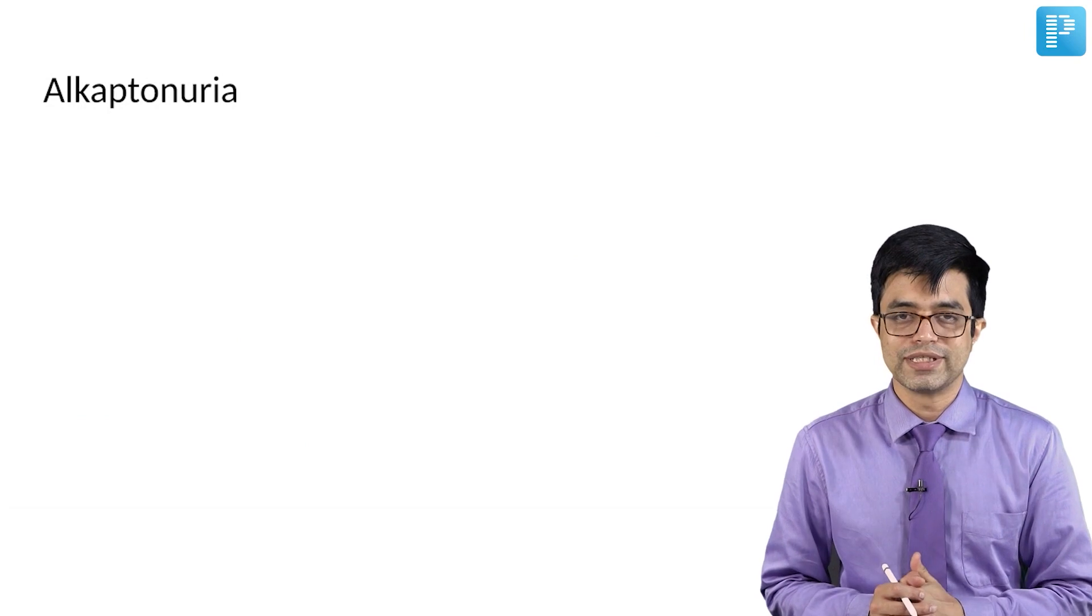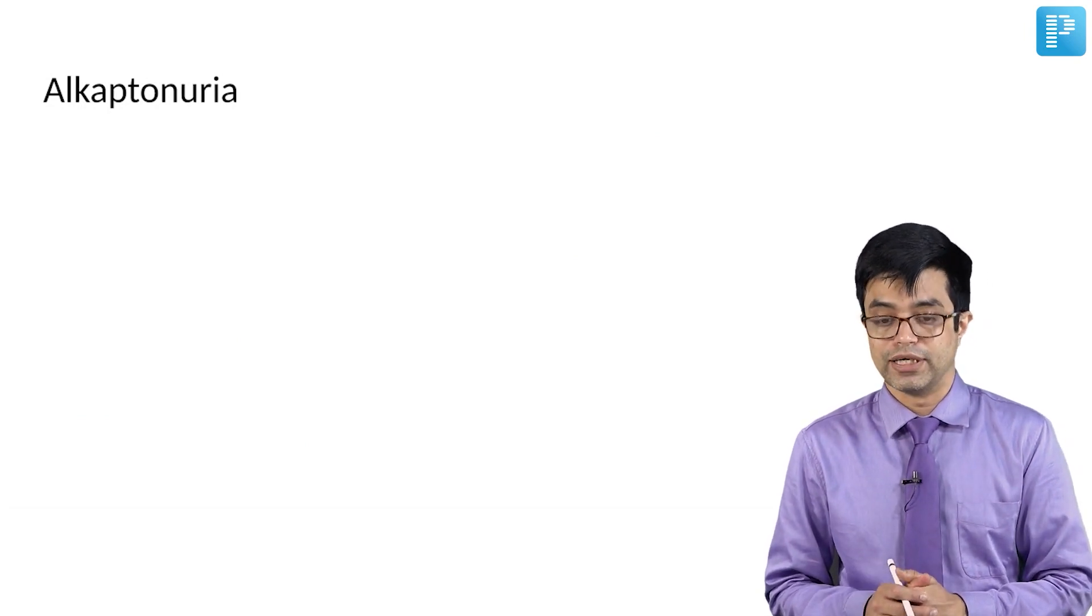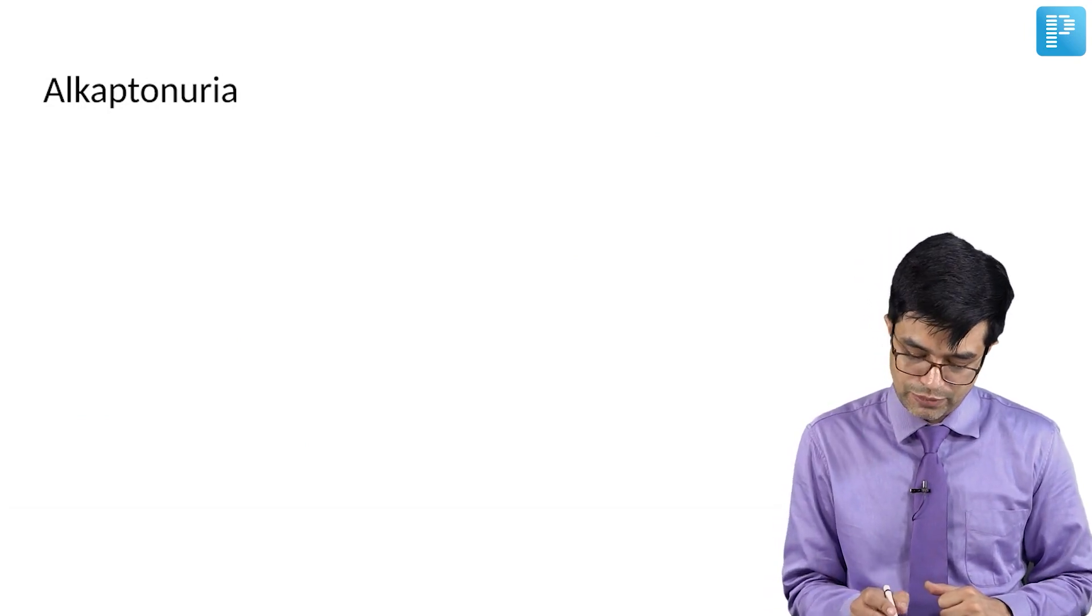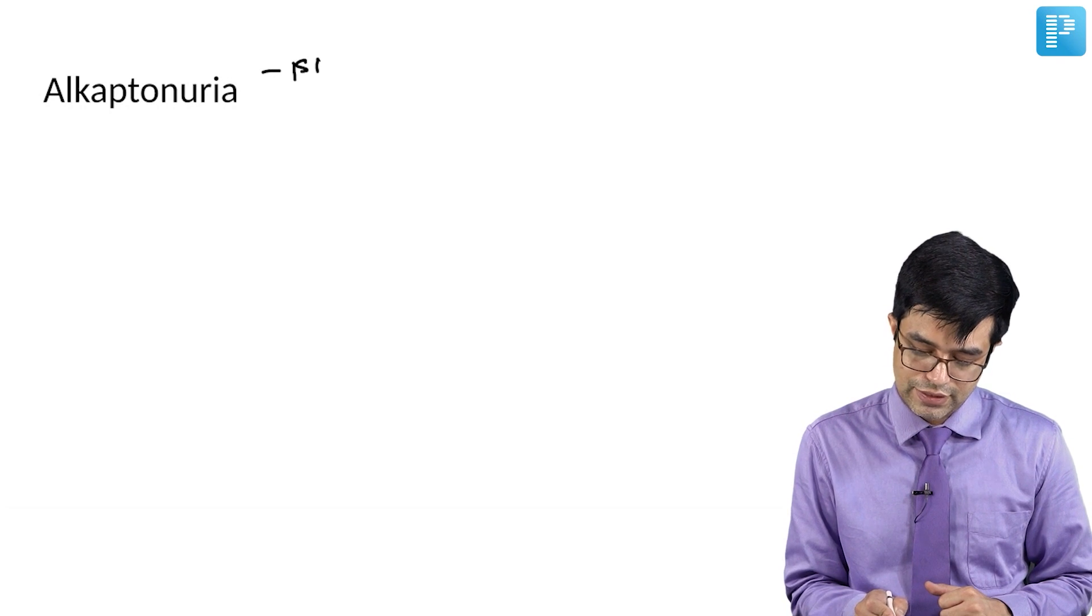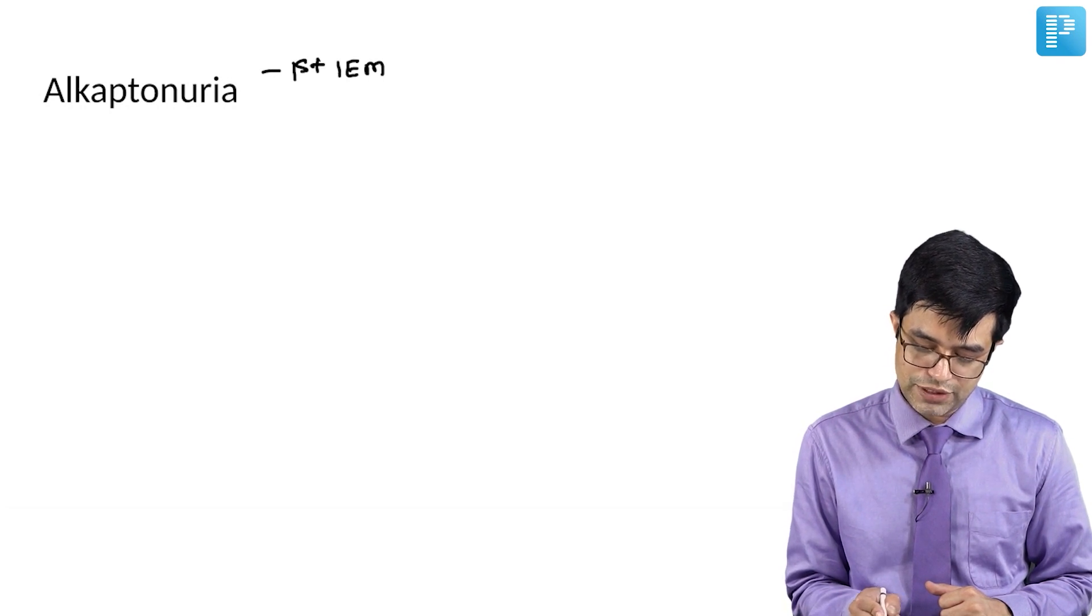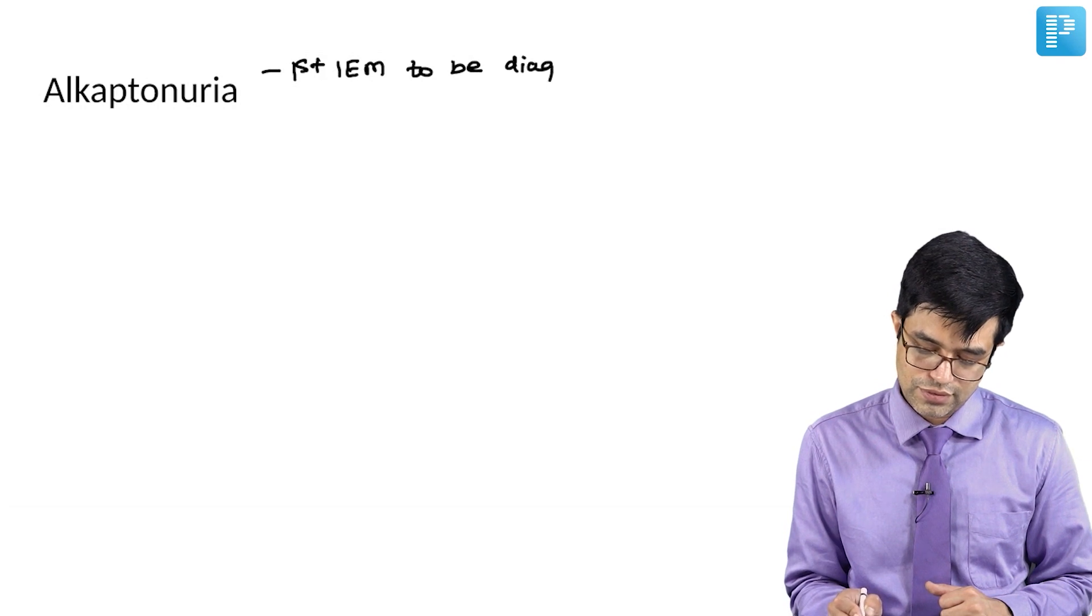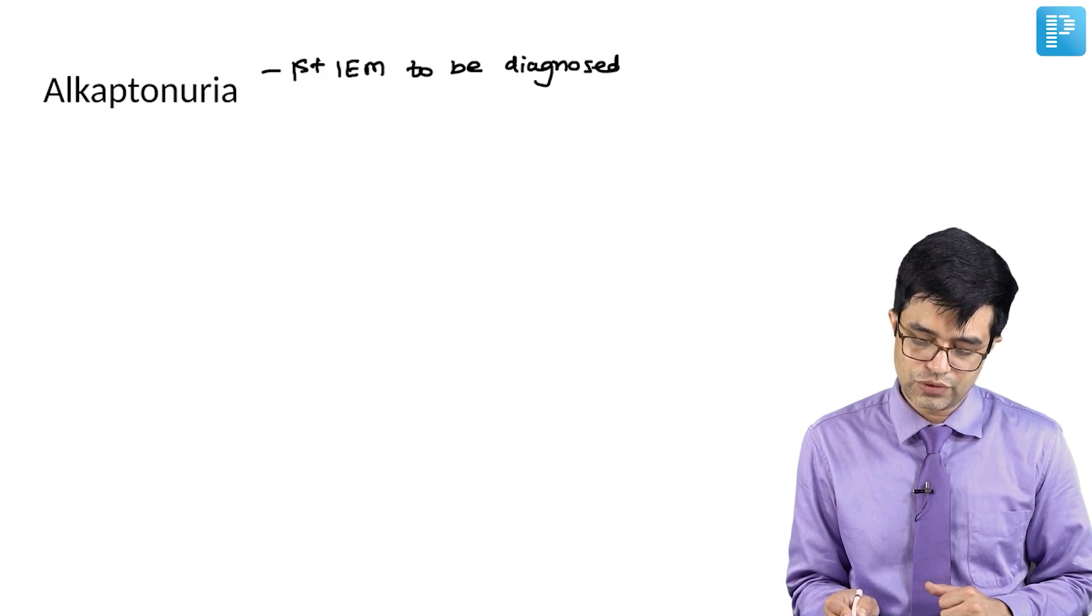Let us turn our attention to the second disease, that is alkaptonuria. First thing to remember, it was the first inborn error of metabolism to be diagnosed. So, this is a historical thing to remember, for example.